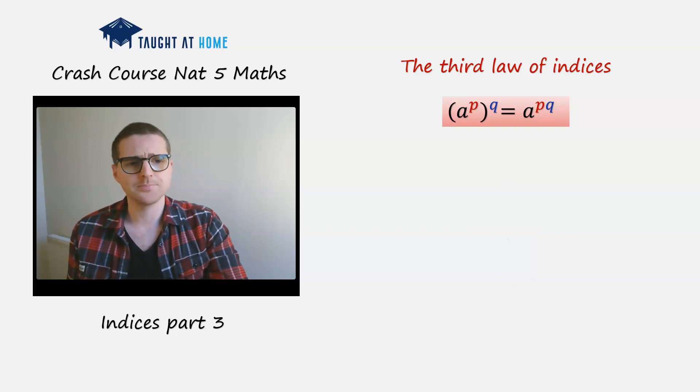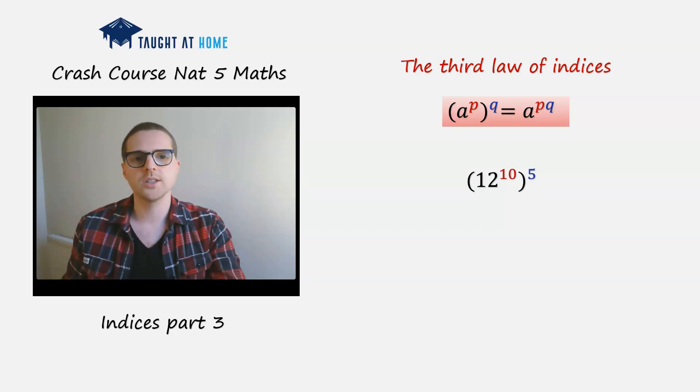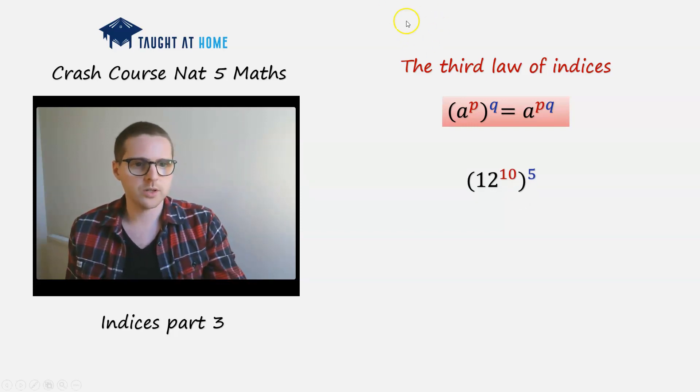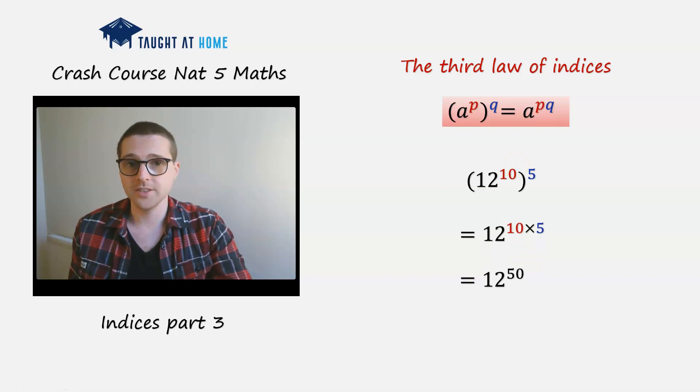Pretty simple, yeah? Okay, let's have 12 raised to the power of 10, in brackets, all raised to the power of 5. We're going to multiply the 10 and the 5 together, and we're going to have 12 raised to the power of 50.